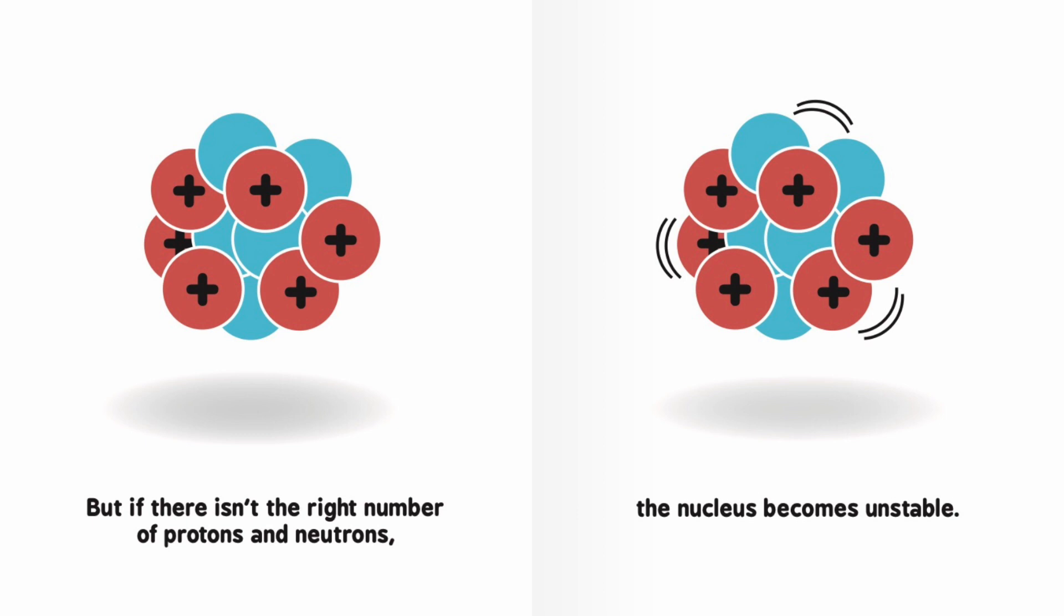But if there isn't the right number of protons and neutrons, the nucleus becomes unstable.